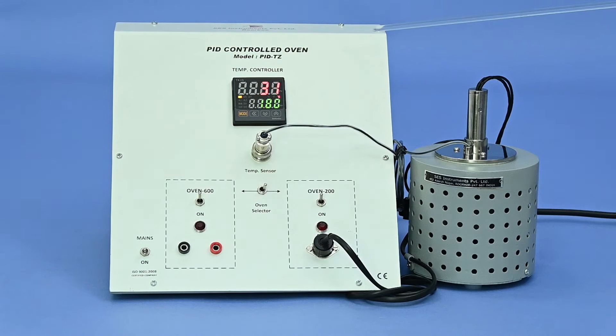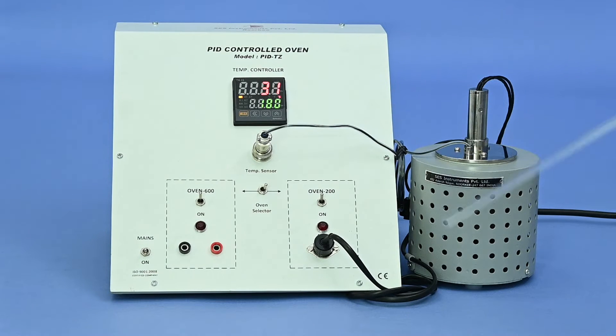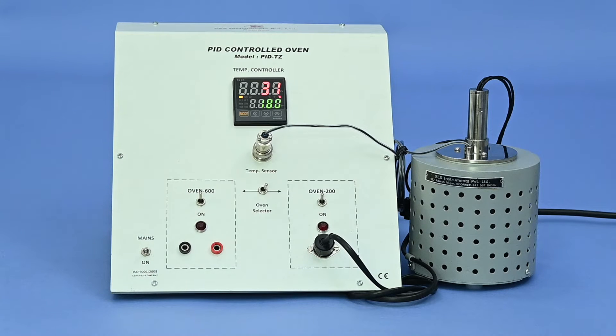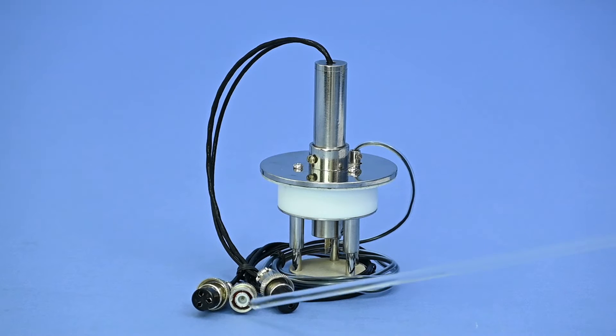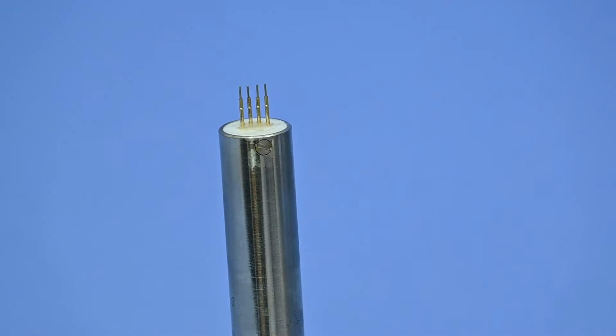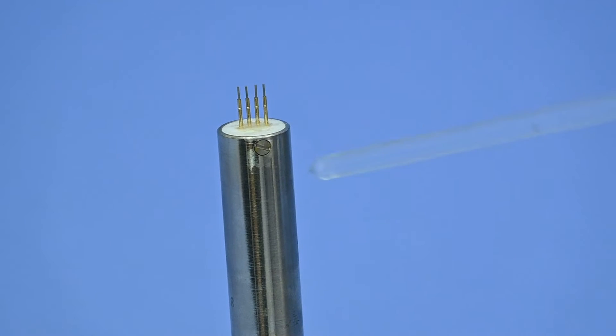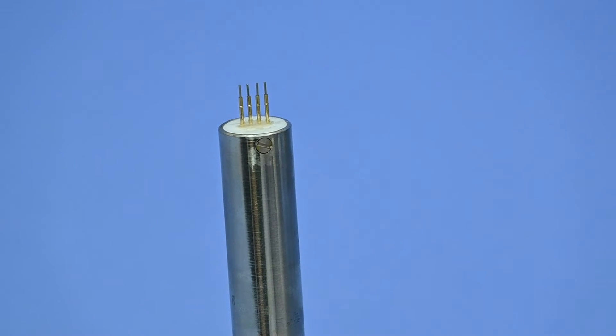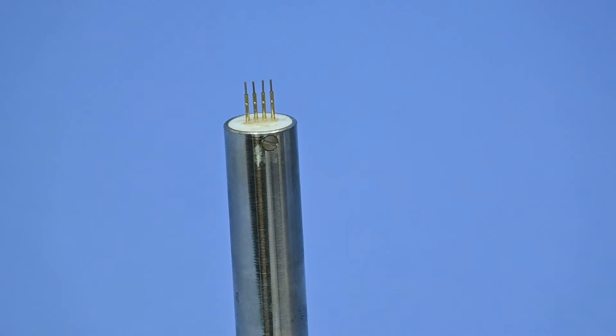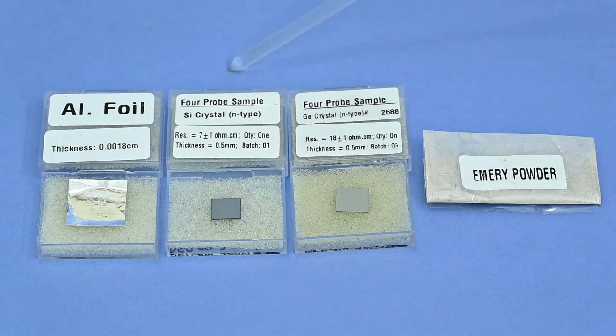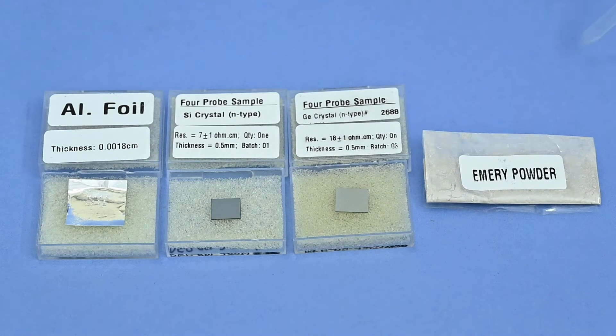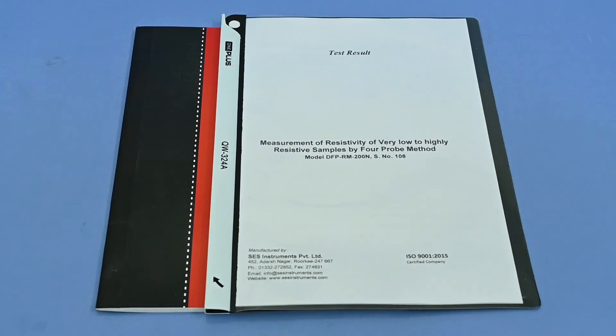PID controller unit with a small oven suitable for 200 degree Celsius temperature. Four probe arrangement with thermocouple sensor and suitable connectors for current, voltage, and temperature. The arrangement consists of four pins in which outer two pins are for current and inner two pins are for voltage. Three samples: aluminum foil, silicon N-type chip, germanium N-type chip, and emery powder. Manual and test results.